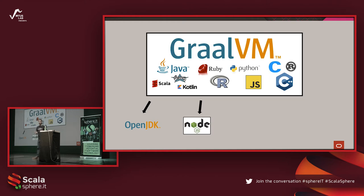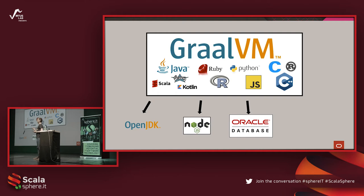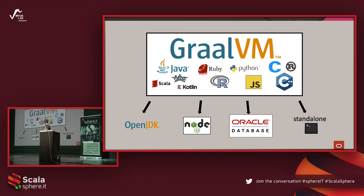Those languages can also run on the Node.js platform. They can also run in the Oracle Database — it's called the Oracle Database Multilingual Engine — so you can run those languages directly close to your data without having to bring data out of the database and push it back. And you can also create native images: standalone binaries that do not use just-in-time compilation. It's an ahead-of-time compiler, so with GraalVM you now have a choice between JIT mode and compiling ahead-of-time.